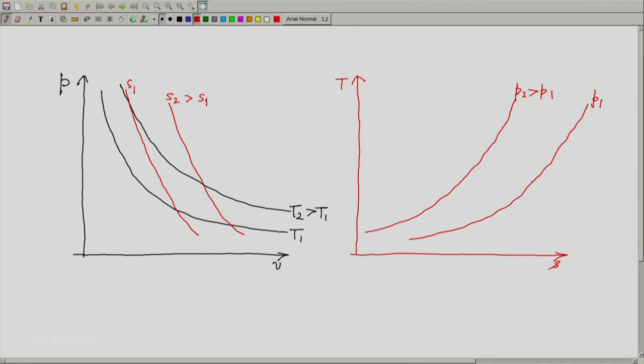The constant volume lines are sharper than these, they are steeper than these. For example, one constant volume line could be like this, another constant volume could be like this. Let us say this is VA line, this is VB line.